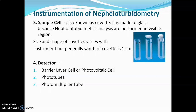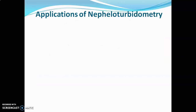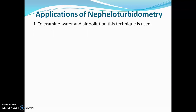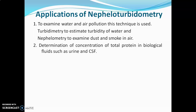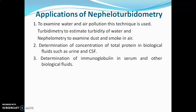The link is given in the description box. Now we will go for applications of nephelo-turbidometry. The first application is to examine water and air pollution — turbidometry is used to estimate turbidity of water, and nephelo-turbidometry is used to examine dust and smoke in the air. Another application is the determination of concentration of total protein in biological fluids such as urine and CSF, which have very low protein concentrations detectable by nephelo-turbidometry. It is also used for determination of hemoglobin in serum and other biological fluids.